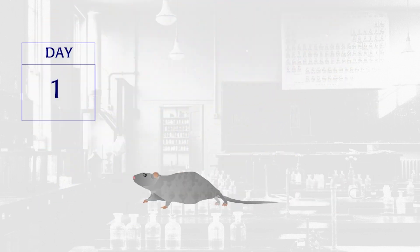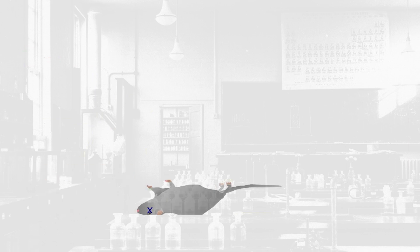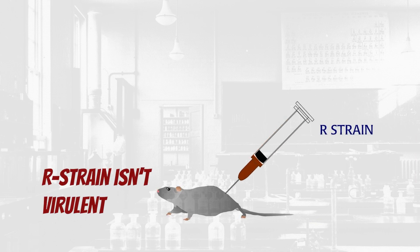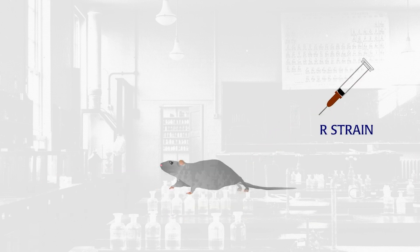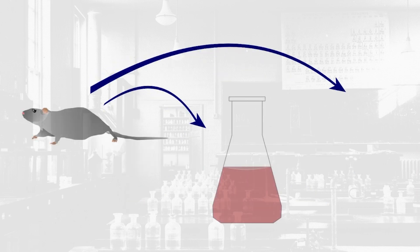Griffith found that mice injected with S-strain develop pneumonia and die within days. Mice injected with R-strain do not get pneumonia. Griffith noticed that different strains of pneumococcus could be cultured from one patient. He began to wonder if one strain could change into another. To test this idea, he did a series of experiments using the R and S-strains.